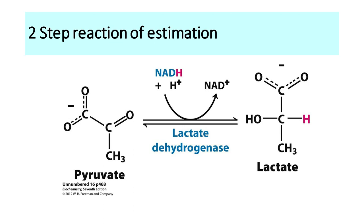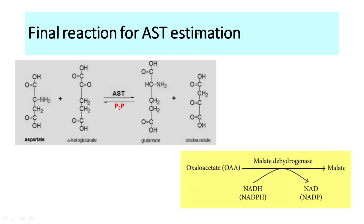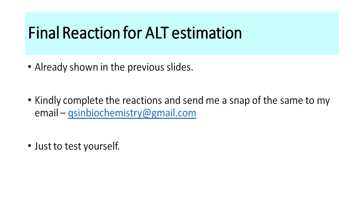For AST, aspartate reacts with the enzyme to form oxaloacetate. This oxaloacetate is then acted upon by malate dehydrogenase — for ALT we use lactate dehydrogenase; for AST we use malate dehydrogenase. Malate dehydrogenase converts oxaloacetate to malate using NADH, producing NAD. NADH has absorbance at 340 nanometers but NAD does not. As the reaction proceeds, NADH is consumed and the absorbance at 340 nm falls, allowing us to run this as a kinetic test to estimate AST levels.